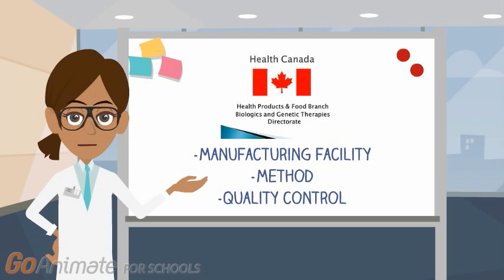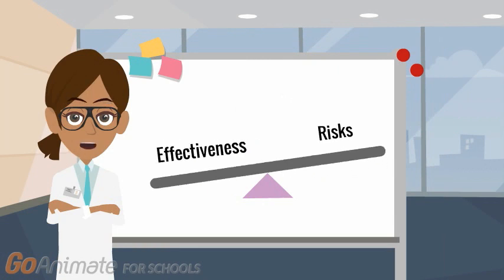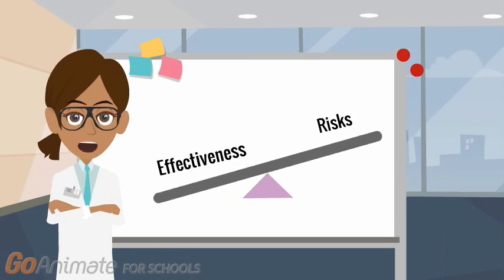BGTD can also conduct an on-site evaluation. Batches of the vaccine are provided to the labs of BGTD for testing to ensure consistent, high-quality production. Once it is concluded that the benefits outweigh the risks, the vaccine is issued a notice of compliance and a drug identification number. Then, the vaccine is authorized for sale in Canada.